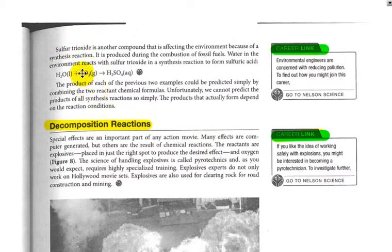Sulfur trioxide is another reactant that could combine with water and it makes sulfuric acid. You can see not only element and element making compound, we can have compound and compound making larger compound. The product of these previous two examples could be predicted by combining the two reactive formulas. However, sometimes it's a little more difficult to figure out what the product is.